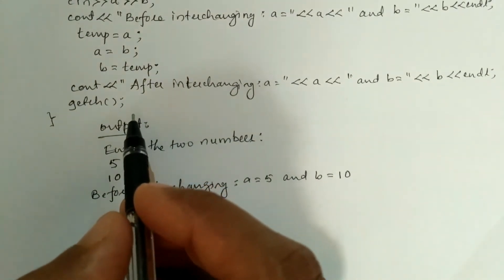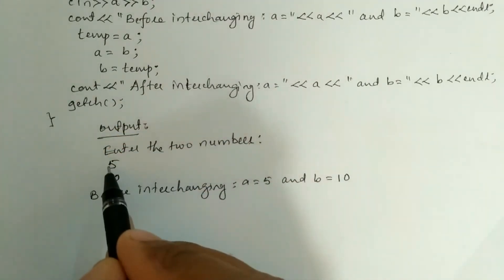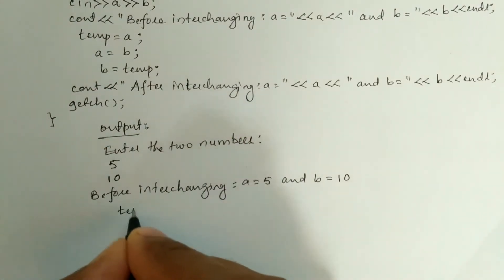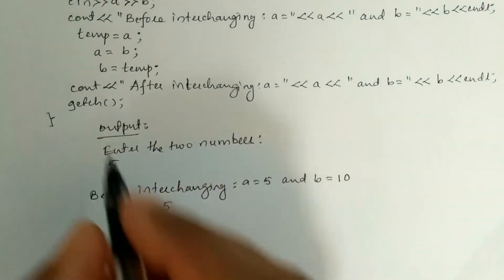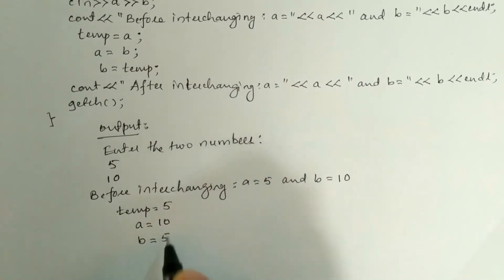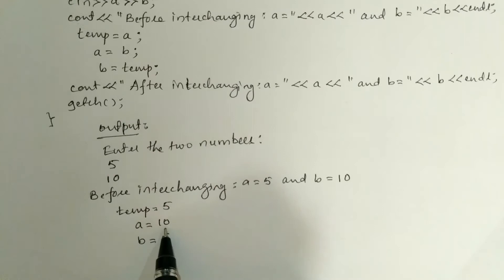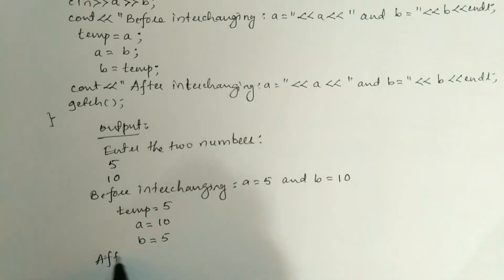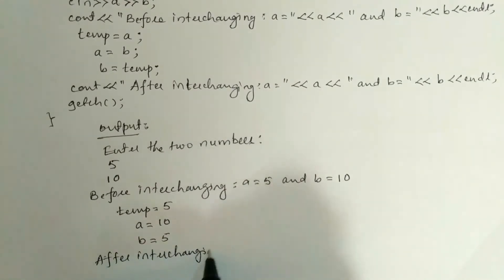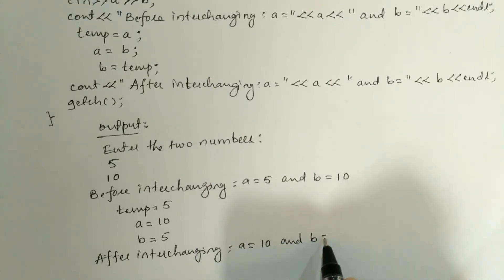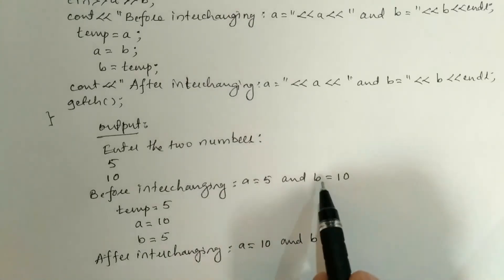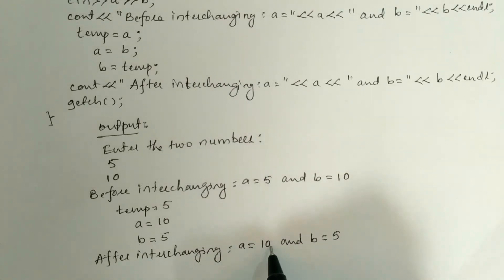Next, let us trace how the swap logic works. a is 5 and b is 10. First, temp equals a, so temp is 5. Then a equals b, so a becomes 10. Then b equals temp, so b becomes 5. You can clearly see that a is now equated with value 10 and b is equated with value 5 — the values have been interchanged.